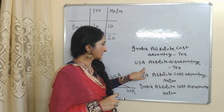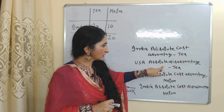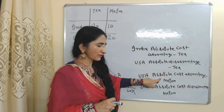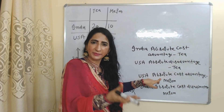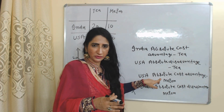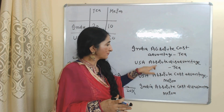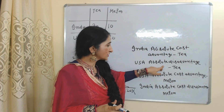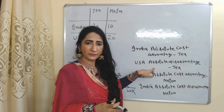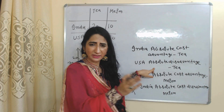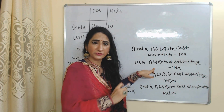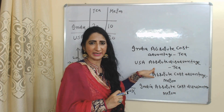USA has absolute cost advantage in melon, so USA should increase the production and export of melon but reduce the production of tea and start importing tea from India.